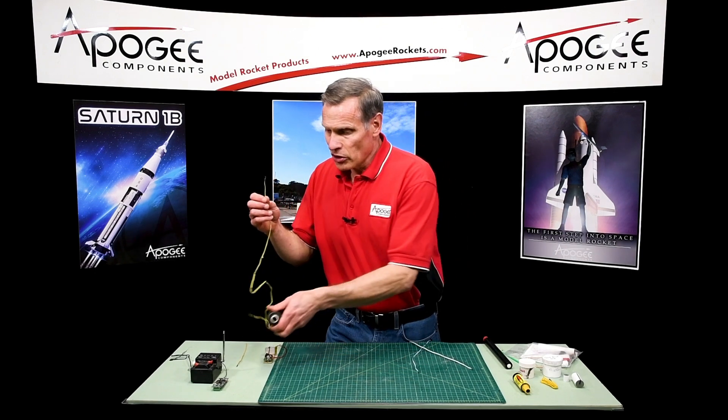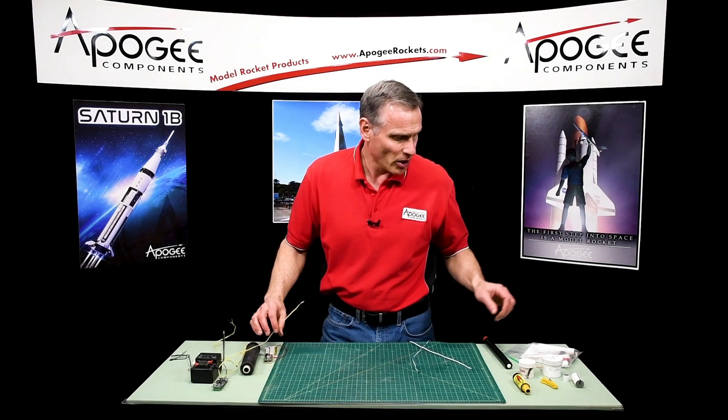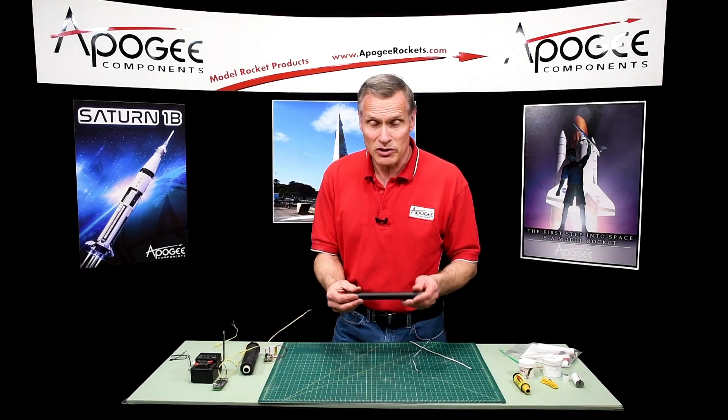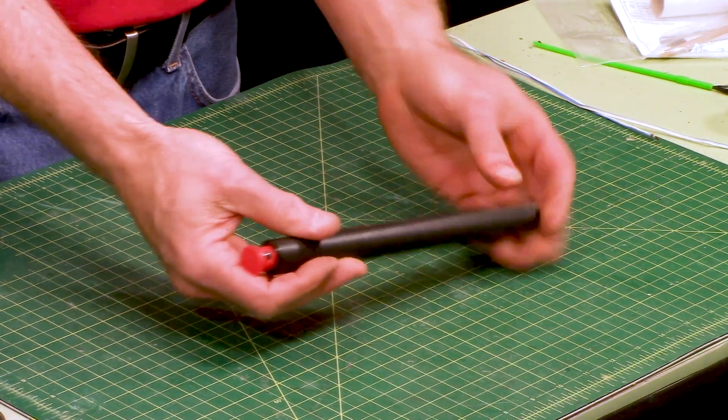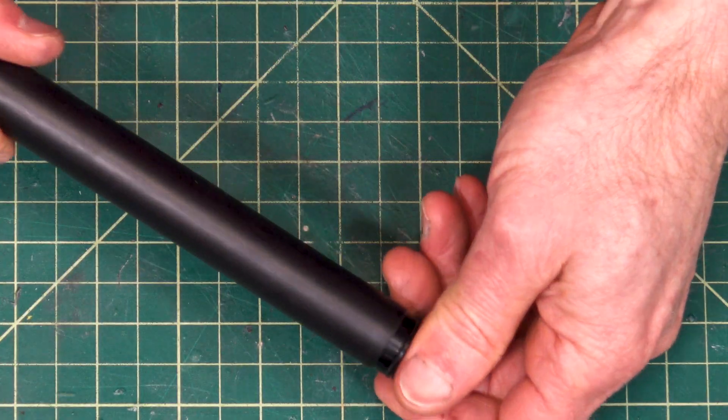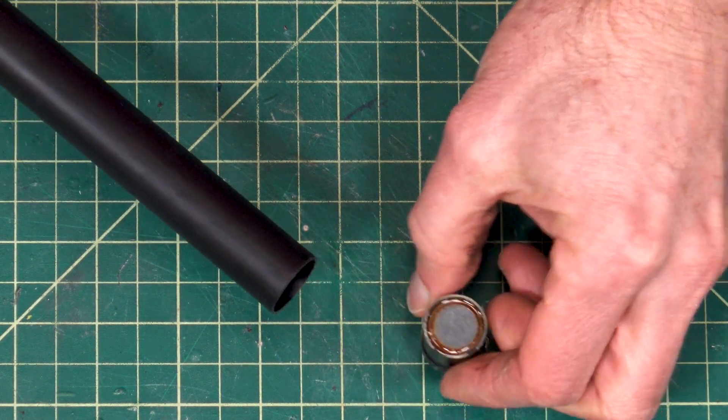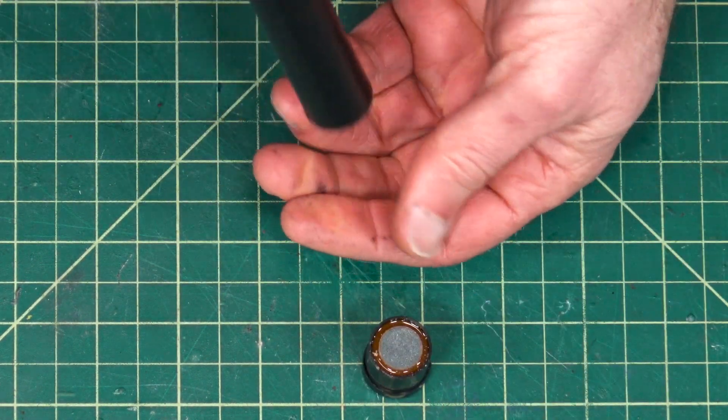Well here's the trick. Well first let me describe the Cessaroni motor and why they are different. So here's a typical Cessaroni reload motor and if you open it up this is your delay and ejection charge there.